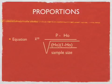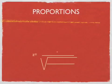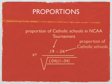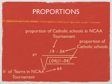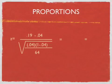So the equation is this nasty looking equation. I'm going to plug in some numbers and it'll become a little simpler. Proportion of Catholic schools in the NCAA Tournament is 0.19 minus 0.04, which is the proportion of all Catholic universities. The sample size is the number of teams in the NCAA Tournament. So we get this equation right here.